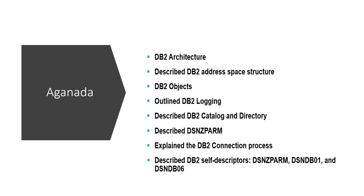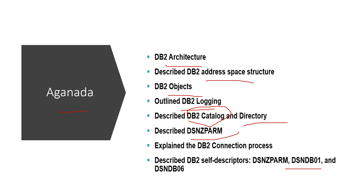This is the agenda for this video. First, we'll discuss DB2 architecture. Next, we'll discuss the address spaces — in DB2 we generally have four types of address spaces. We'll also understand what is a DB2 object, outline the DB2 login process, discuss the catalog database DSNDB06 and the directory DSNDB01, understand ZPARM parameters in DB2, and explain the DB2 connection process.